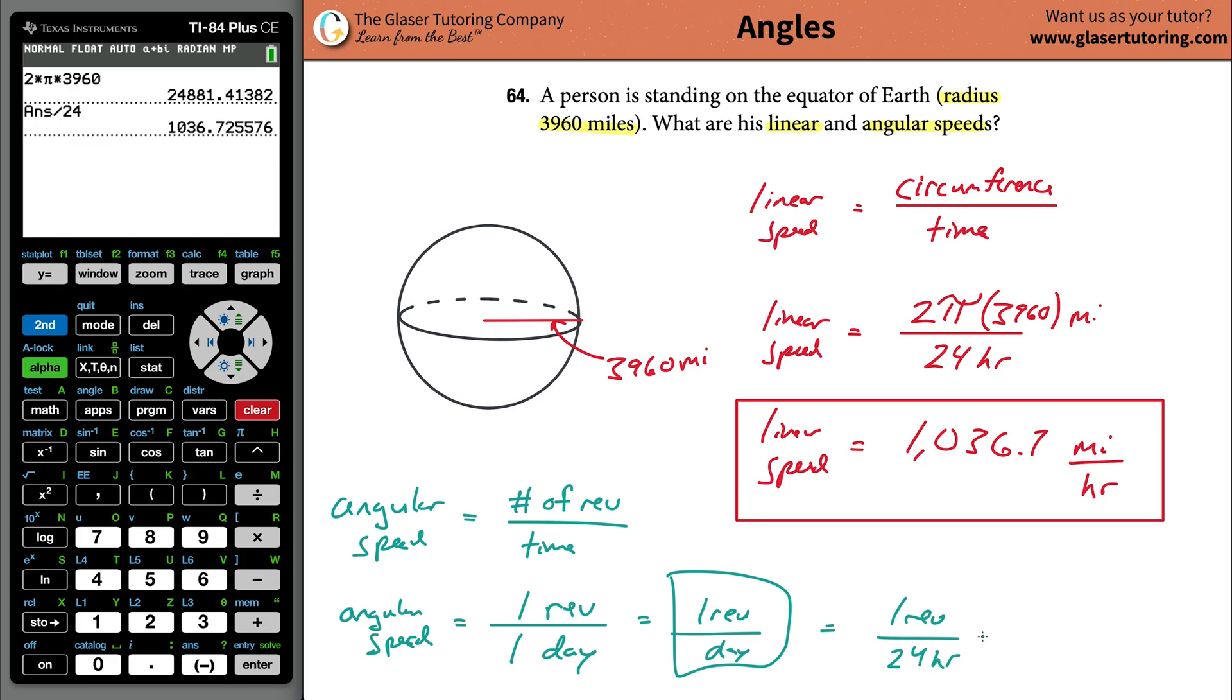You could also say that it's one revolution per 24 hours. And then all you'd have to do is take the one and divide it by the 24, and that'll come out to be 0.0416 repeating revolutions every single hour. That's also acceptable. These two are equivalent, it doesn't matter. They're both telling me the same information, just with different ratios between the time.